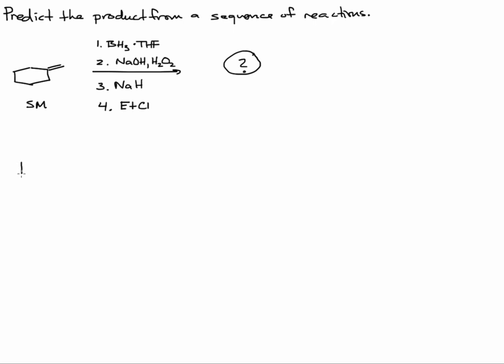Let's redraw our starting material. In step one, which I'll abbreviate S1, we're treating with this reagent here, BH3-THF. In our algorithm of solving these types of problems, it helps to identify what the major functional group of the starting material is. In this case we have an alkene and it happens to be disubstituted.